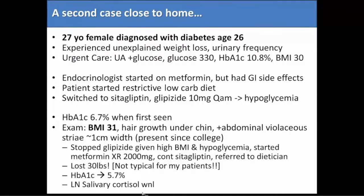I wanted to focus on weight loss: I stopped glipizide, which can promote weight gain, and instead encouraged her to try extended-release metformin — going really slow — and she did okay on it. We kept the sitagliptin, referred her to a dietician, and encouraged exercise. And she lost 30 pounds — which almost never happens. Her hemoglobin A1C went down to 5.7%. I had also checked a late-night salivary cortisol that came back normal, so I was thinking this patient has type 2 diabetes and responded to weight loss. It seemed really straightforward.